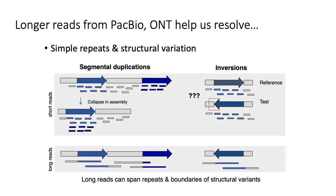One of the main benefits of both PacBio and Nanopore over Illumina is that they give you much longer reads. You can easily get reads on the order of 10 KB compared to Illumina's 150 base pair reads. For example, suppose that you're interested in studying structural variation in the human genome, such as sequencing regions that have segmental duplications.